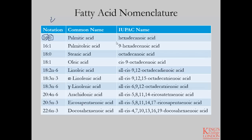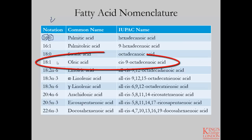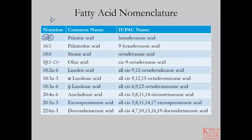All three of these names tend to be used interchangeably in literature and various publications around lipids, and the rest of this table just illustrates this for you. Another example is oleic acid — it's a monounsaturated fatty acid with 18 carbons, so its notation is 18:1. Oleic acid is its common name, but its IUPAC name is cis-9-octadecanoic acid.